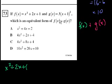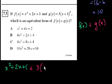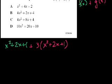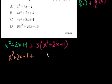We're going to add g of x to that. g of x is 3 times x plus 1 squared, which we expand to 3 times x squared plus 2x plus 1. Distributing the 3, that gives us 3x squared plus 6x plus 3. So now we add: x squared plus 2x plus 1 plus 3x squared plus 6x plus 3.